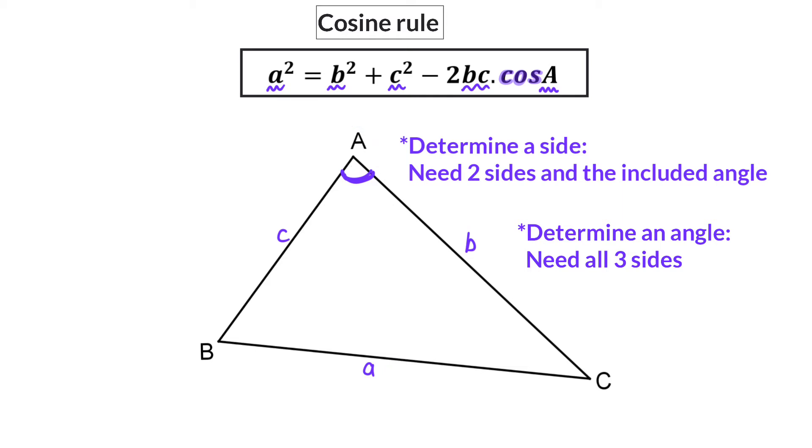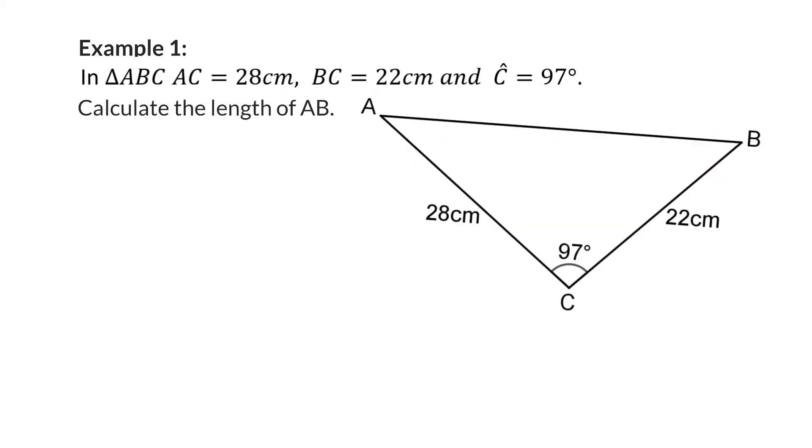Let's go and have a look at a few examples. Example 1. In triangle ABC, AC is 28 cm, BC is 22 cm, and angle C is 97 degrees. Calculate the length of AB.